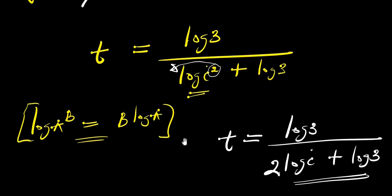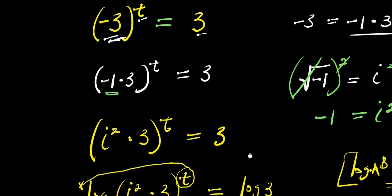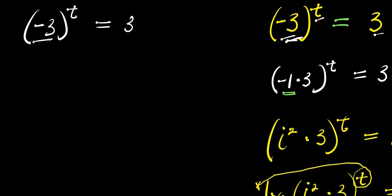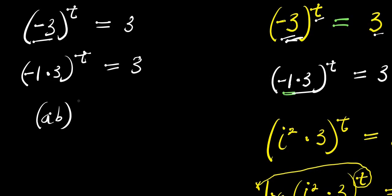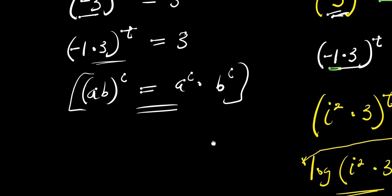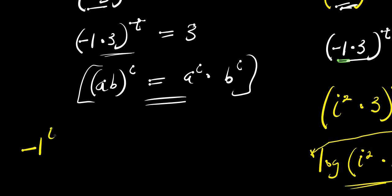Now let's consider the second method of solving this particular problem. So I still have negative 3 to the power of t equals 3. In this second method, I'm still going to replace negative 3 with negative 1 times 3, raised to the power of t, equals 3. Remember, if you have a times b raised to the power of c, this equals a to the power of c times b to the power of c. Applying this, I'm simply going to have negative 1 to the power of t times 3 to the power of t, and this equals 3.